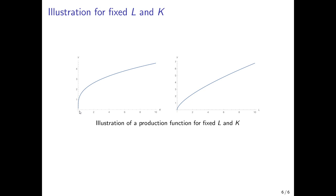In the first diagram, holding labor fixed and changing capital: if we have no capital for a constant amount of labor, we cannot produce. The first unit of capital employed increases production tremendously, but then the curve starts to flatten. As K goes to infinity, the curve becomes flatter and flatter, approaching zero slope. The same holds with respect to L holding K fixed: the first unit of employment increases output quite a lot, but then it starts to level off.